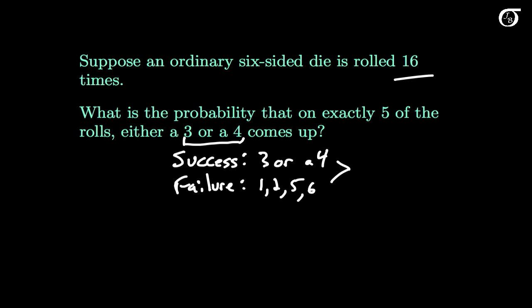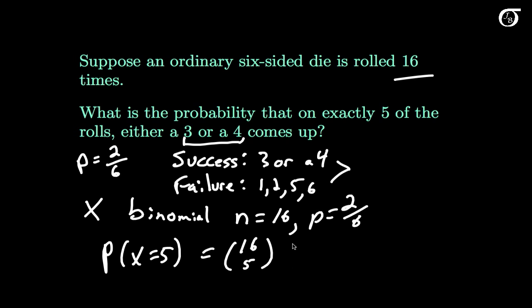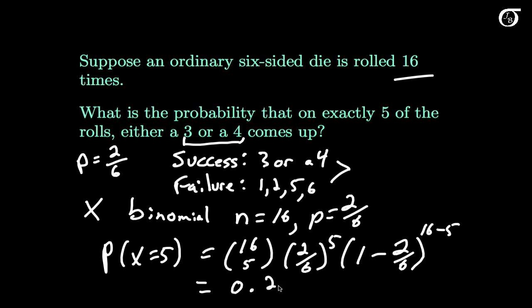We have 16 trials, with success or failure in each one. The trials are independent because knowing what happens on one roll gives you no information about another. The probability of success stays the same from trial to trial — the probability of getting a 3 or a 4 — and for a perfectly balanced die, theoretically that's 2 out of 6. So if we let x be the number of rolls on which a 3 or 4 appears, then x has a binomial distribution with n = 16 and p = 2/6. The probability that x equals 5 is found from the binomial formula: n choose x, times p to the x, times (1 - p) to the (n - x), which works out to 0.2078.